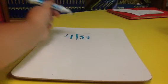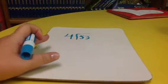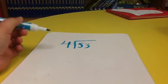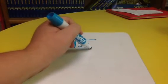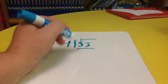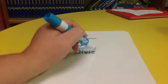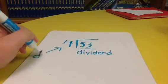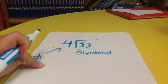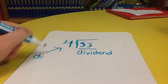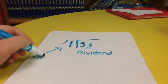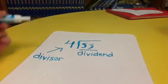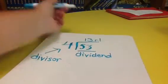So one thing that we've gone over is the number that's inside of this box is called our dividend, and then this number that is outside is our divisor.